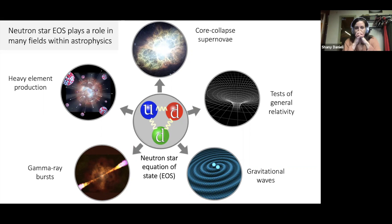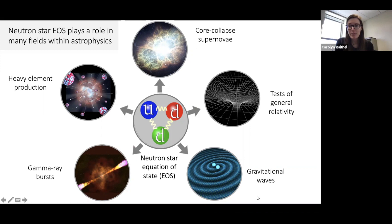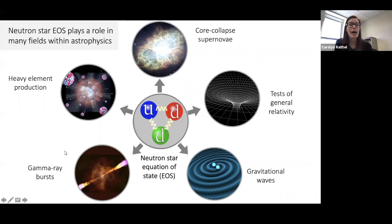The neutron star equation of state can pop up in many areas. Today I'll be talking about gravitational wave events, but the neutron star equation of state also determines in part the outcomes of core collapse supernovae. It can influence the gamma-ray bursts powered by neutron star mergers. These mergers are also the production sites of some of the heaviest elements in our universe via the r-process nucleosynthesis. Yet the neutron star equation of state remains poorly constrained at the densities and compositions of interest.